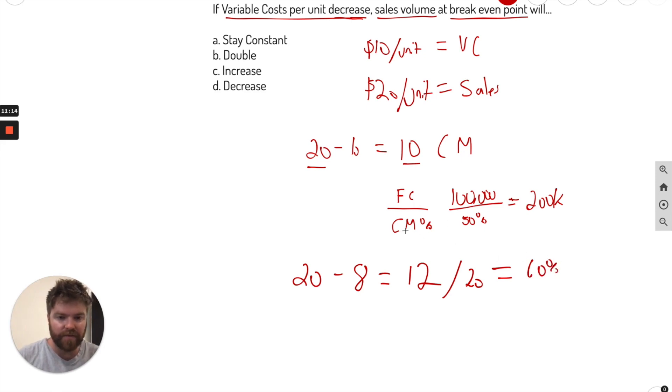Now what happens with the formula? Well, fixed cost divided by CM percentage, 100K. Use the same number as before. We now update the percentage. It was 50, now it's 60. So what happened to the sales at breakeven point? It went down. Now it's 166,667. So if variable cost per unit decreases, sales volume at breakeven will decrease.